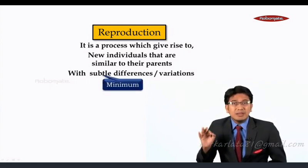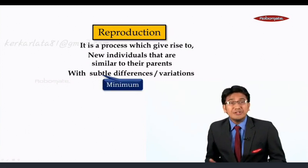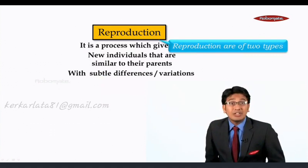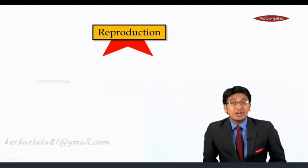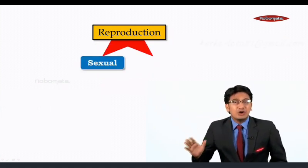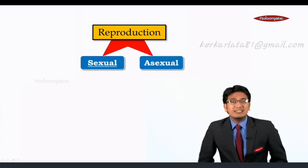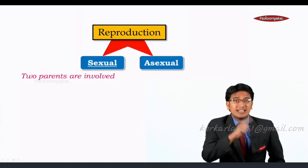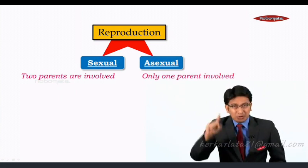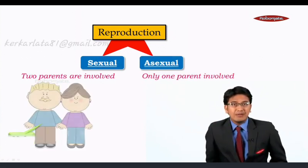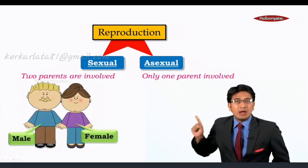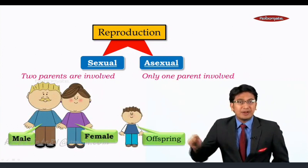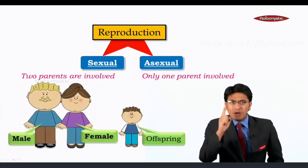Subtle here means minimum variations. There are two types of reproduction: sexual and asexual. In sexual reproduction, two parents are involved — one male and one female — producing offspring. In asexual reproduction, only one parent is involved.